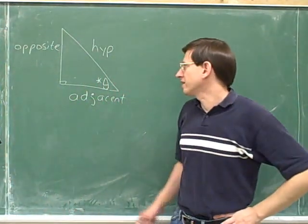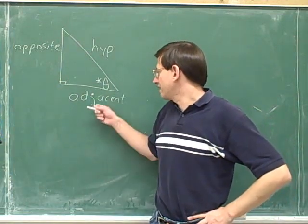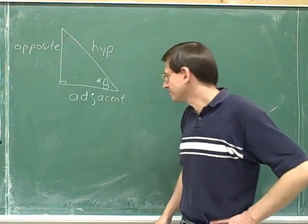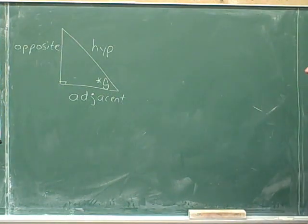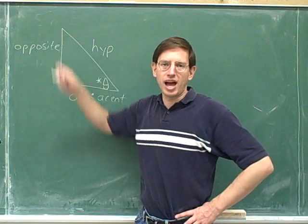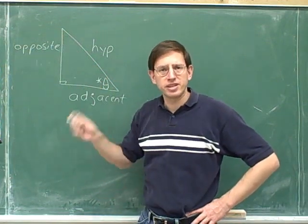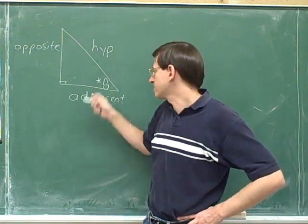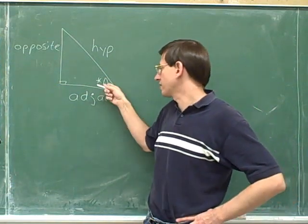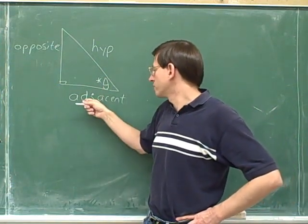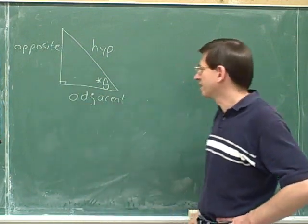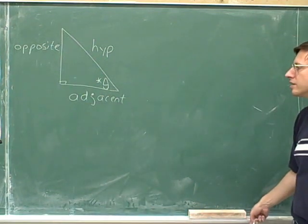It's now clear how we label the hypotenuse and the side that's adjacent to and opposite an angle. If we had focused on the other angle, the opposite and adjacent sides would have been different. But focusing on theta at the bottom: this horizontal side leg is adjacent, and this vertical leg is opposite to that angle.